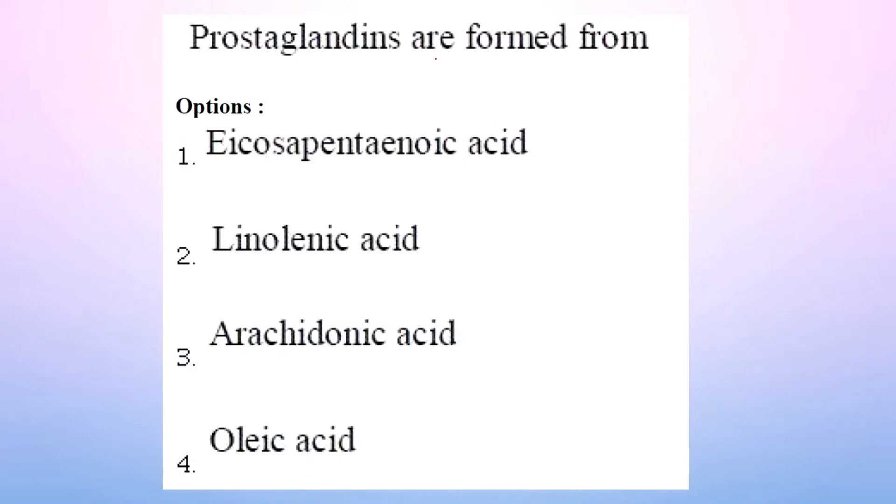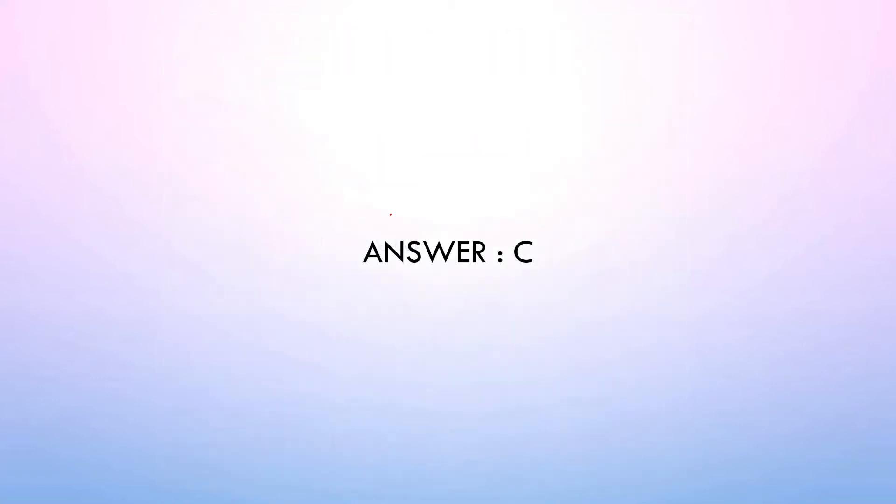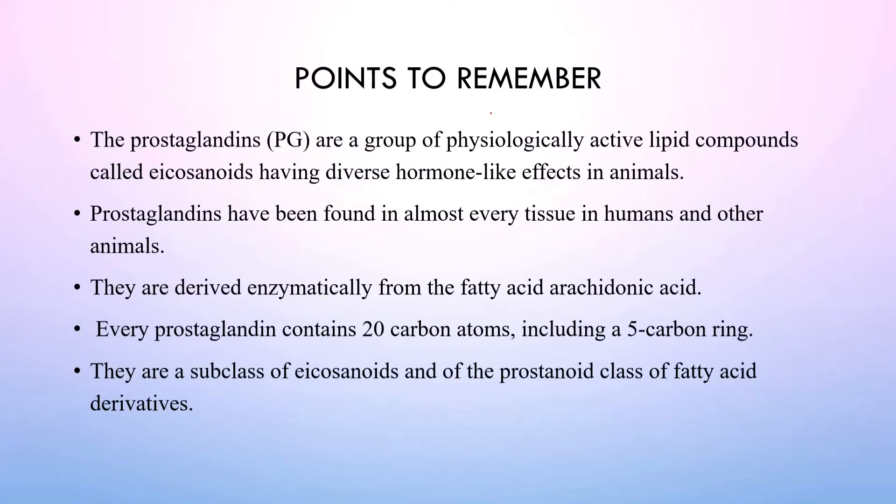Prostaglandins are formed from: Icosapentanoic acid, linolenic acid, arachidonic acid, oleic acid. The correct option is option C, arachidonic acid. That is also a fact. The prostaglandins are a group of physiologically active lipid compounds called eicosanoids having diverse hormone-like effects in animals. They regulate inflammation and immune system. Prostaglandins are found in almost every tissue in humans and other animals. They are derived enzymatically from fatty acids, specifically arachidonic acid. In our cell membrane, arachidonic acid is present.